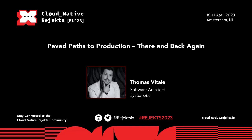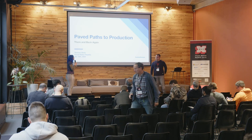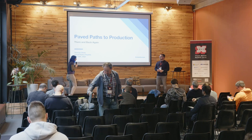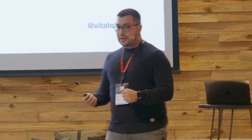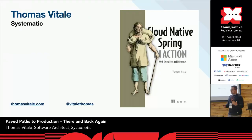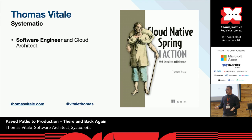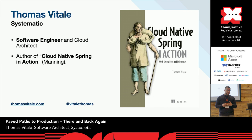For our next talk, we have Thomas, who's going to talk to us about paved path to production. Thank you very much, and thank you all for joining. Today I'm going to talk about how to design and build a paved path to production on Kubernetes. I work at Systematic, a software company. I'm a software engineer and cloud architect there. I'm really passionate about anything cloud native. I wrote a book called Cloud Native Spring in Action with Spring Boot and Kubernetes, and I'm a big supporter of open source technologies.